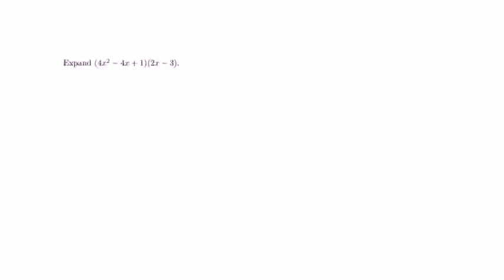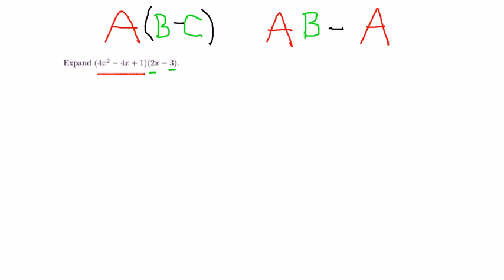Now like I did in the other video, I'm going to treat the entire expression 4x squared minus 4x plus 1 as A. Then I'm going to treat 2x and 3 as B and C. So in our example, I'm going to use some color coding here.